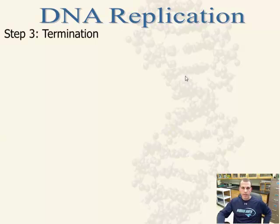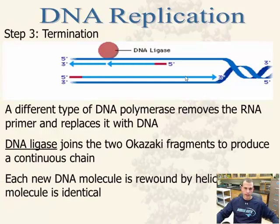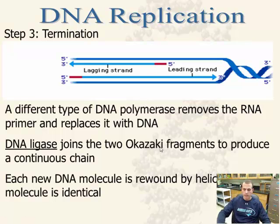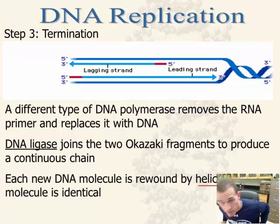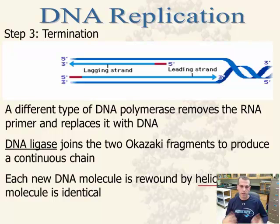The third step of DNA replication is termination. In termination, a different type of DNA polymerase removes some of what we call RNA primers. The main thing you need to know here is that the helicase comes back in — the same enzyme that originally helped unwind and unzip the molecule — and now what it does is it helps rewind it back up. That would be the ending part of DNA replication: the helicase returns and helps rewind the DNA so it's able to fit back into the structure it needs to be.